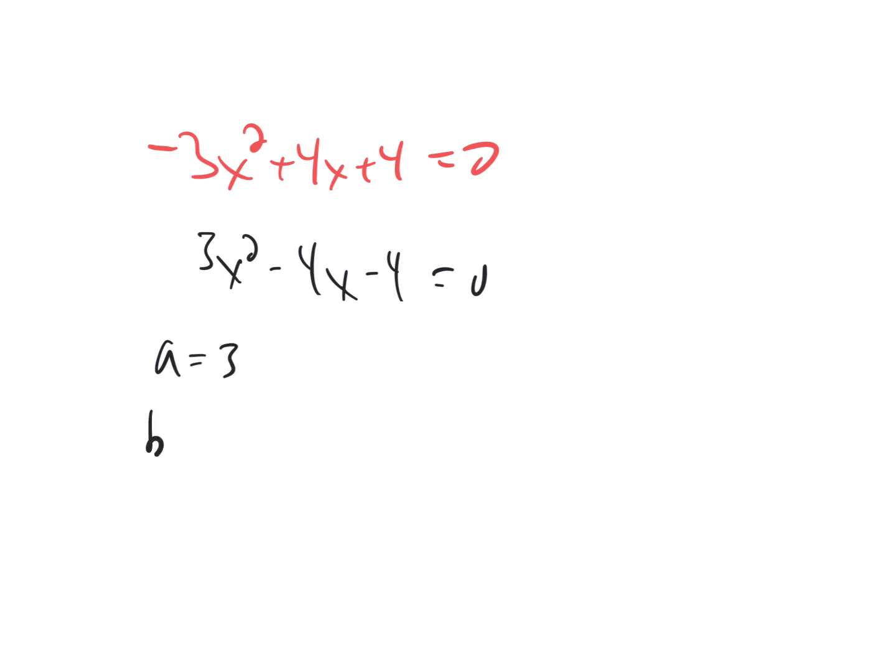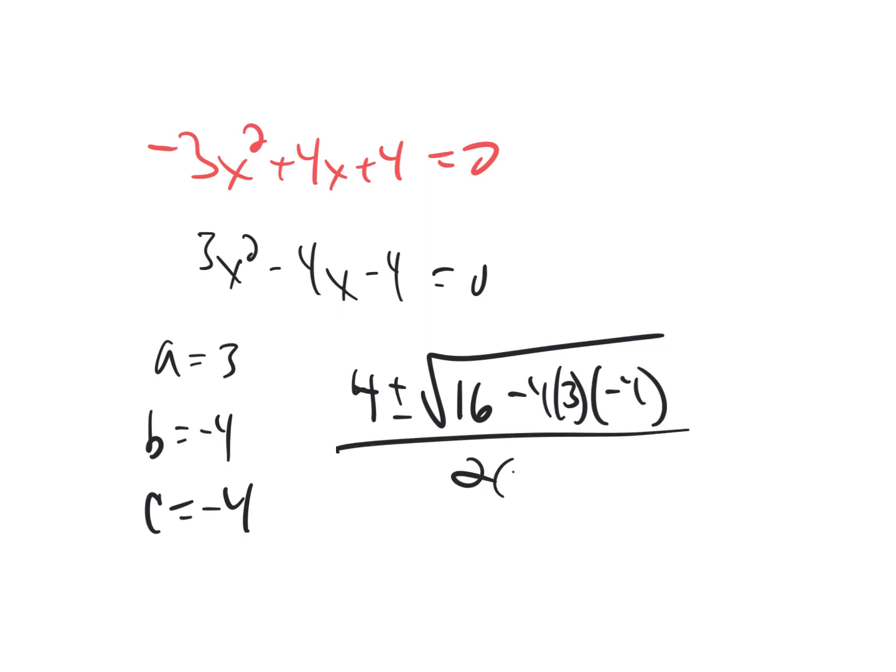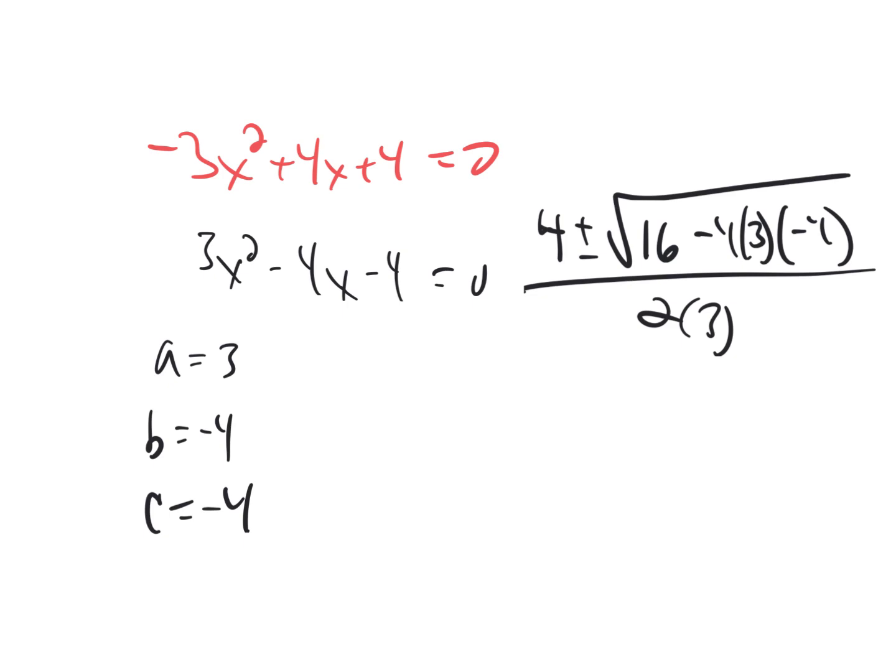So a equals 3, b equals negative 4, c equals negative 4. And we'll use a quadratic formula. Negative b turns into positive 4 plus or minus b squared, which is 16 minus 4 times 3 times negative 4 all over 2 times 3. Well, at least it's not going to be another imaginary number. Let's see what that gives us. That gives us 4 plus or minus the square root of 16 plus 48. 4 over 6. That's going to be 4 plus or minus the square root of 64.